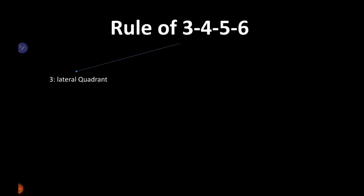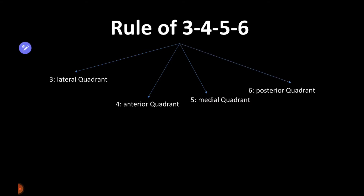According to this rule, there are three muscles in the lateral quadrant, four muscles in the anterior quadrant, five muscles in the medial quadrant, and six muscles in the posterior quadrant.